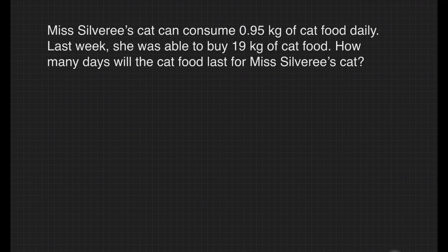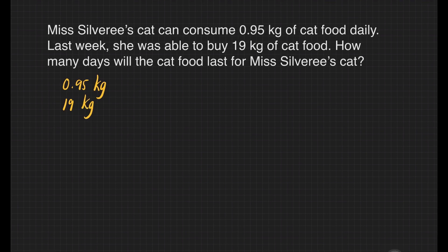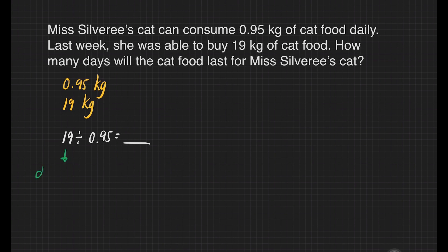We have the first problem here. Miss Silvery's cat can consume 0.95 kilograms of cat food daily. Last week, she was able to buy 19 kilograms of cat food. How many days will the cat food last for Miss Silvery's cat? Our given is 0.95 kilograms and 19 kilograms. Our division sentence is 19 kilograms divided by 0.95 kilograms is equal to blank. 19 is our dividend, 0.95 is our divisor, and our answer is called the quotient.